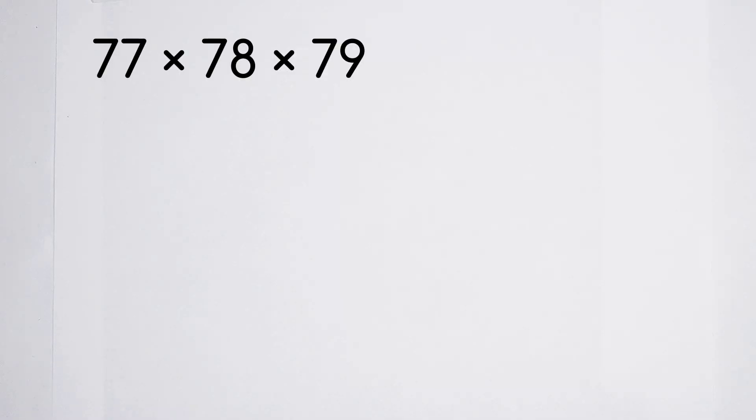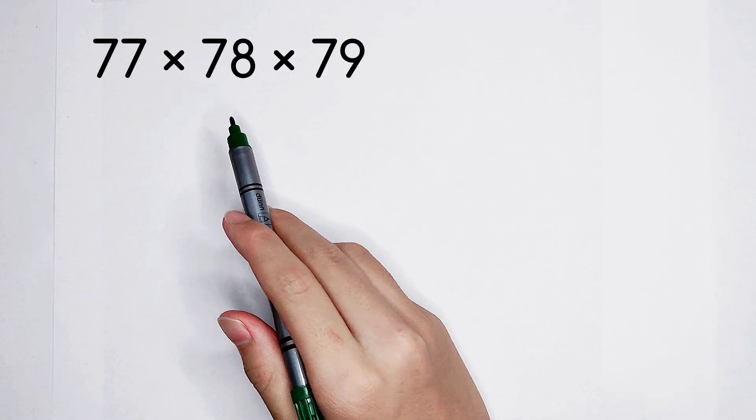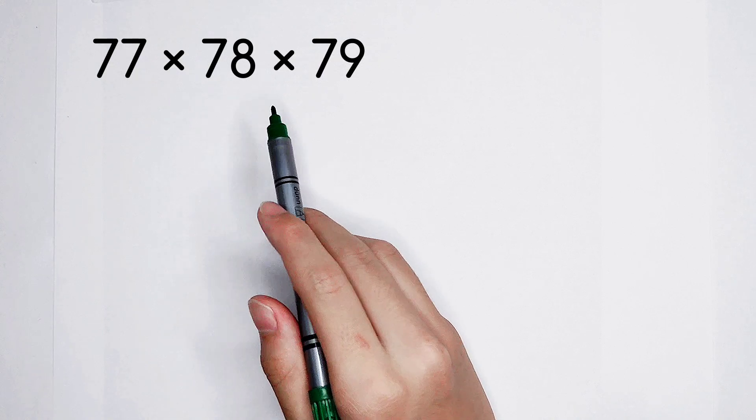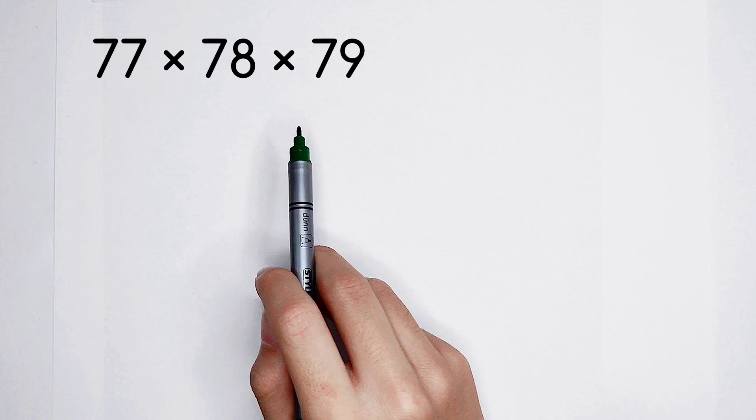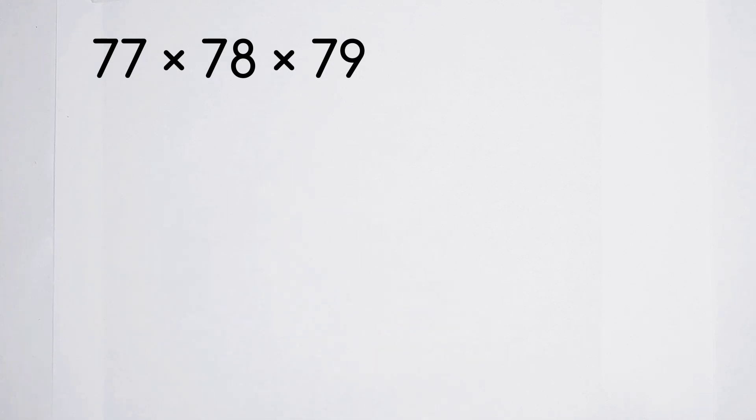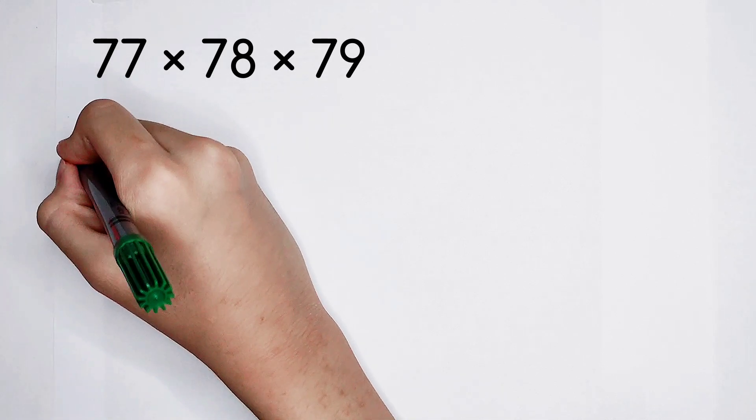Welcome to Math We Know. Calculate 77 times 78 times 79 in one minute without calculators. Focus on this question. Okay, use our brain and our hands. Do it.